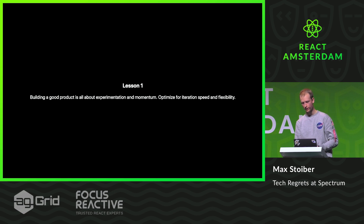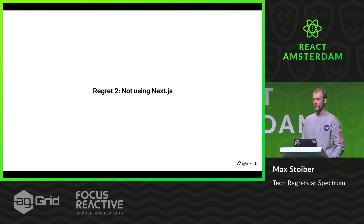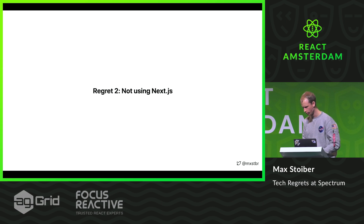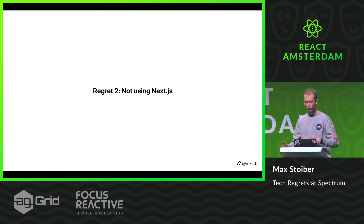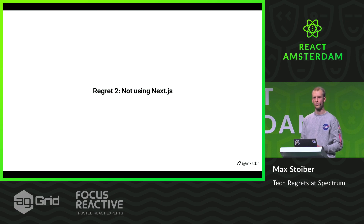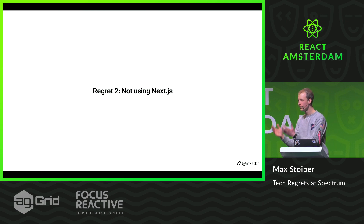My second regret is also related to search engine optimization, and it's not using Next.js. I cannot say enough good things about Next.js. We had built a prototype with Create React App, which is great, but we knew we needed server-side rendering. Search engine optimization without server-side rendering is a no-go. Yes, Google kind of indexes client-side rendered apps, but if you have data fetching after the initial render, they won't index your content. It's great that they'll index our loading spinner, but that's not what we wanted. We wanted the content to be search engine indexed, so we needed server-side rendering.